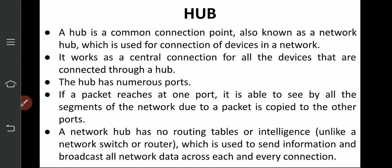Hub has numerous ports — depending on the size of the device, it may have 25, 30, 40, or 50 ports. If a packet reaches at one port, it is able to be seen by all segments of the network because the packet is copied to the other ports. So a packet is transferred port to port.